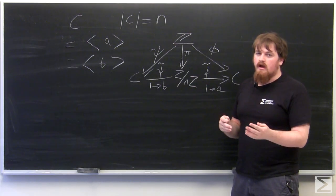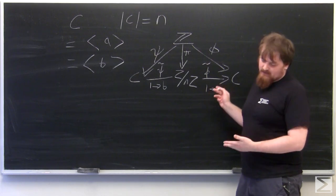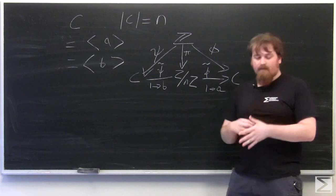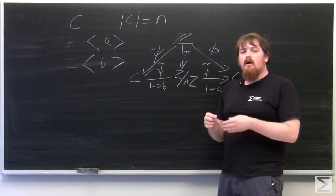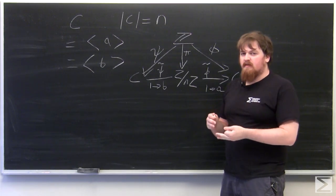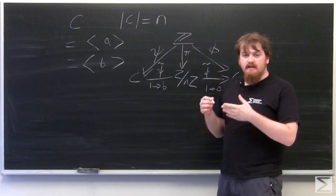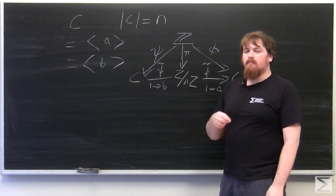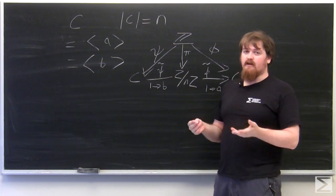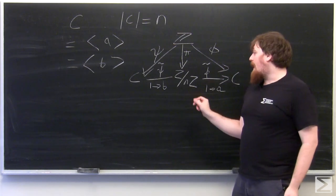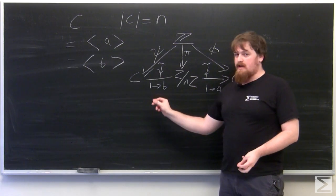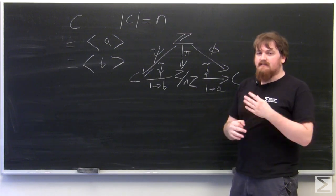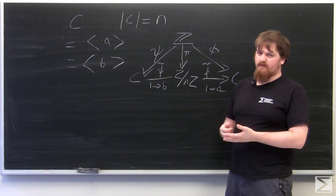And this will work for any two single elements which generate the cyclic group C. Because automorphisms need to respect the group operation, every power of A gets sent to the corresponding power of B in the automorphism that sends A to B. Just the fact that it sends A to B determines the entire automorphism on the cyclic group.